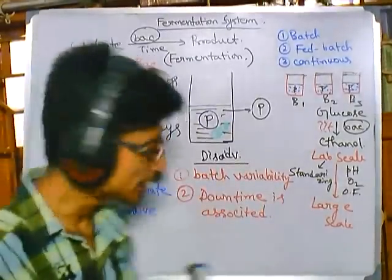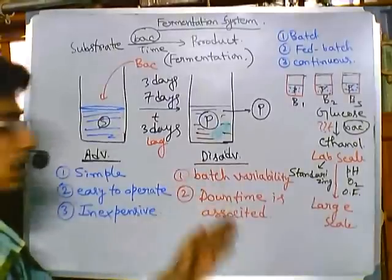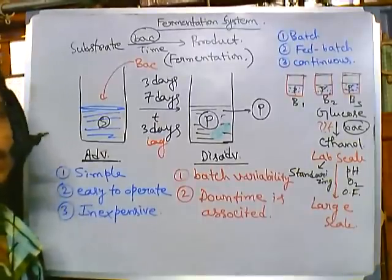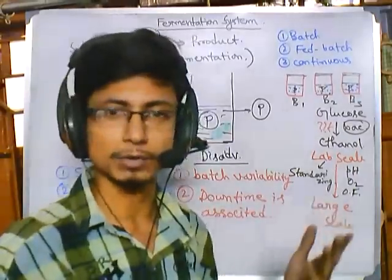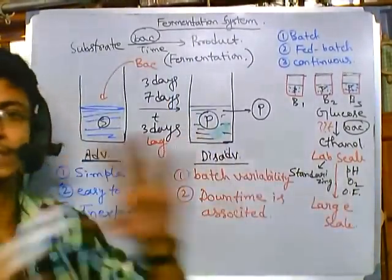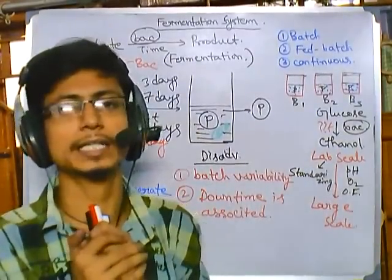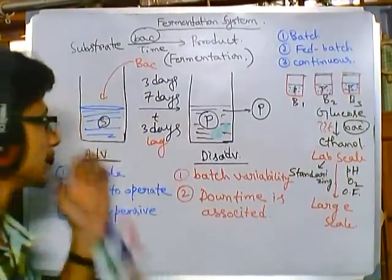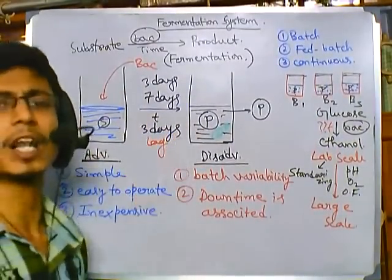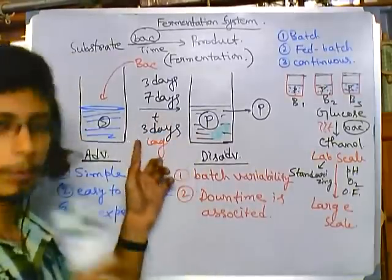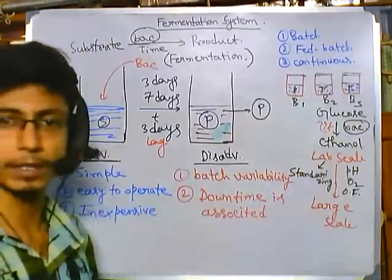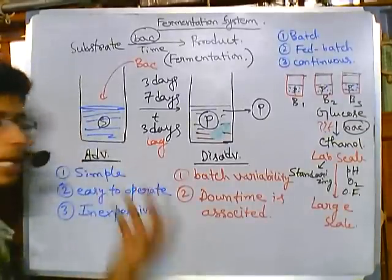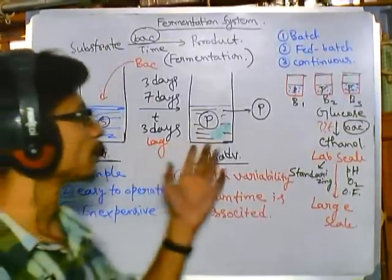These additional three-day periods around each fermentation cycle are called the downtime of the batch fermenter. Downtime means one batch fermenter cannot continuously give you products. The two major disadvantages are: batch variability and associated downtime. This makes the process less efficient — time is money. To counteract this, industries use many batch fermenters running in parallel, so while one is in downtime, others are fermenting.